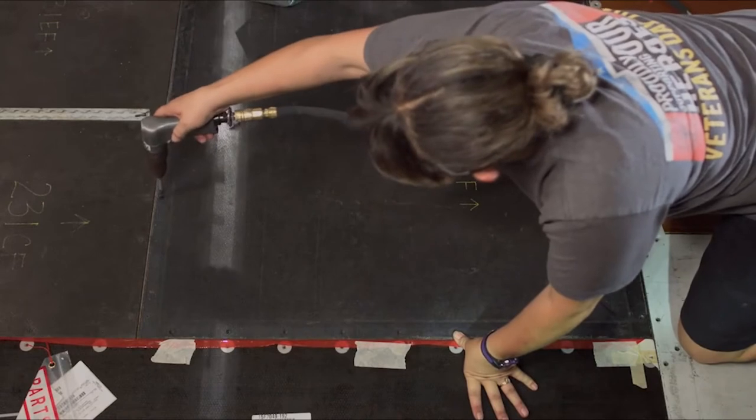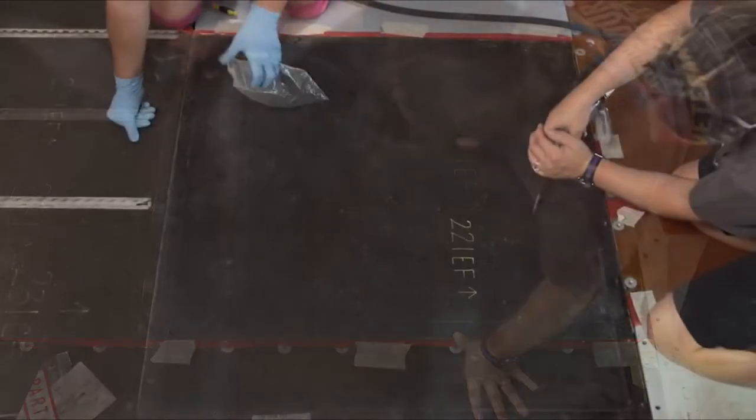Although typically not required, a pointed tool may be used to punch holes in the PRS at fastener locations.